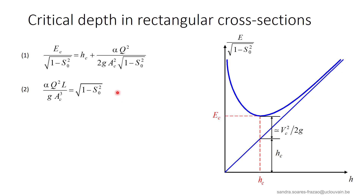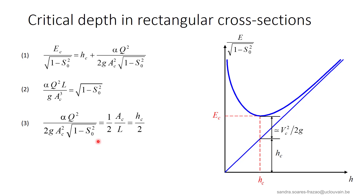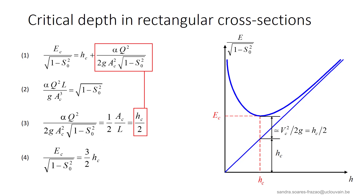Then using the definition of the critical depth, we can transform the last term of equation 1, as written in equation 3, and we see that it is equal to half of the critical depth. This means that the part of the specific energy corresponding to the kinetic energy at the critical depth is equal to Hc/2, yielding the result in equation 4. So under critical flow conditions, two-thirds of the energy is potential energy and one-third is kinetic energy. This result will be very useful in practical applications like the hydraulics of weirs, which will be discussed later.